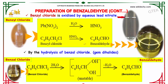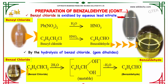Benzaldehyde can also be obtained by the hydrolysis of benzal chloride, which are gem dihalides. Benzal chloride on hydrolysis produces an unstable intermediate, where the OH group and hydrogen leave as a byproduct to form water, and the oxygen forms a double bond with the carbon, giving us benzaldehyde.